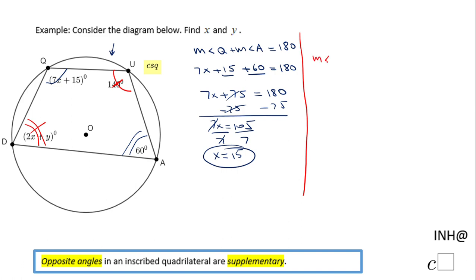Measure of angle D plus the measure of angle U equals 180. They are opposite angles in an inscribed quadrilateral, so they are supplementary. Angle D is 2x plus y, angle U is 140, and that equals 180. Remember we have x equals 15, so we can replace this x of 15 in this expression.